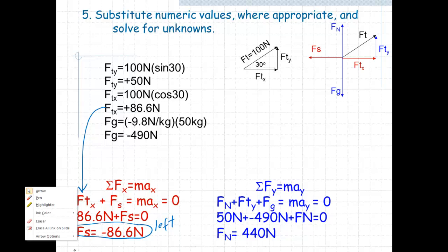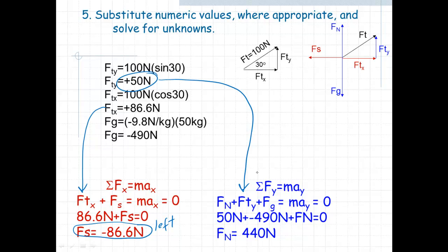Let's look at what's happening in the vertical direction. In the vertical direction, we could take our value of FTY and plug it into there for our vertical equation. We could take our value for FG and plug it into there in the vertical equation and solve for the normal force. When we plug our values in, we get a normal force of 440 Newton, and it's positive, and that's correct because as it shows in the picture, it is indeed upward.